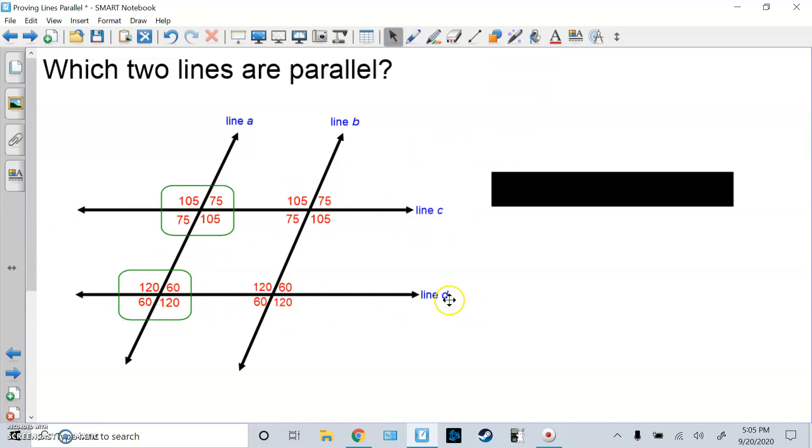Here I'm checking if line C is parallel to line D through transversal A because this is a line going through them. Are these corresponding angles equal? 105 and 120? No, so that already failed. Alternate interior angles are not equal, so that fails. Corresponding angles are not equal, that fails. Same side interior angles do make 180, but that fails. So they'll try side by side.